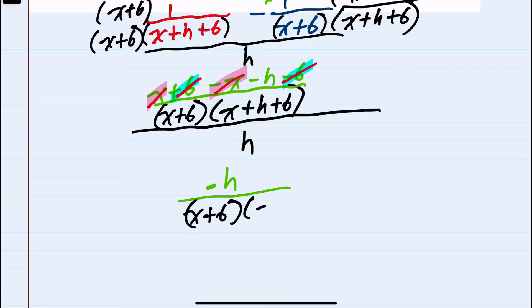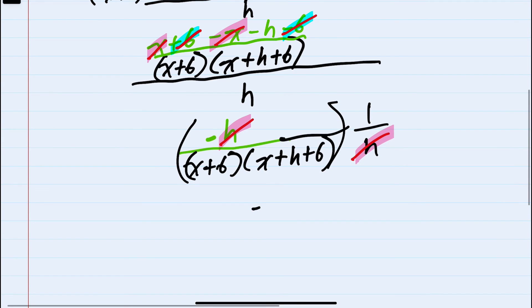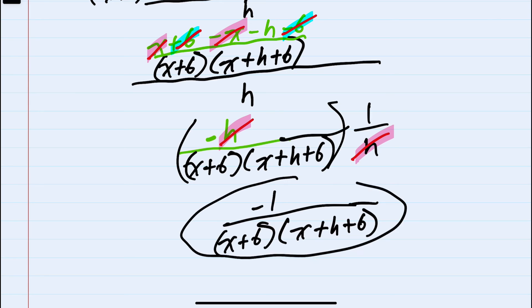Since we're dividing all of that by h, I can say that it's the same thing as multiplying by 1 over h, and this allows me to see that the h and the h will again cancel. I'll be left with just a minus 1 in the numerator and in the denominator the x plus 6 times x plus h plus 6 as my final simplified answer.